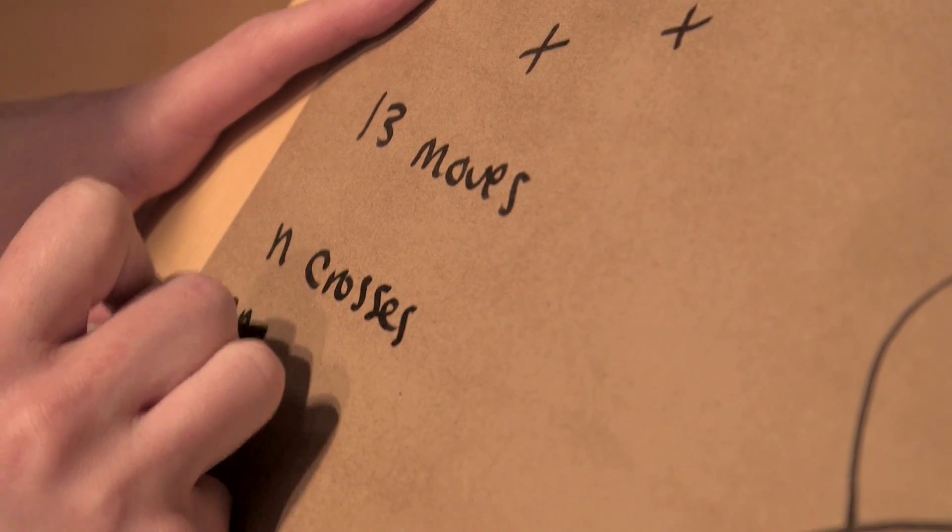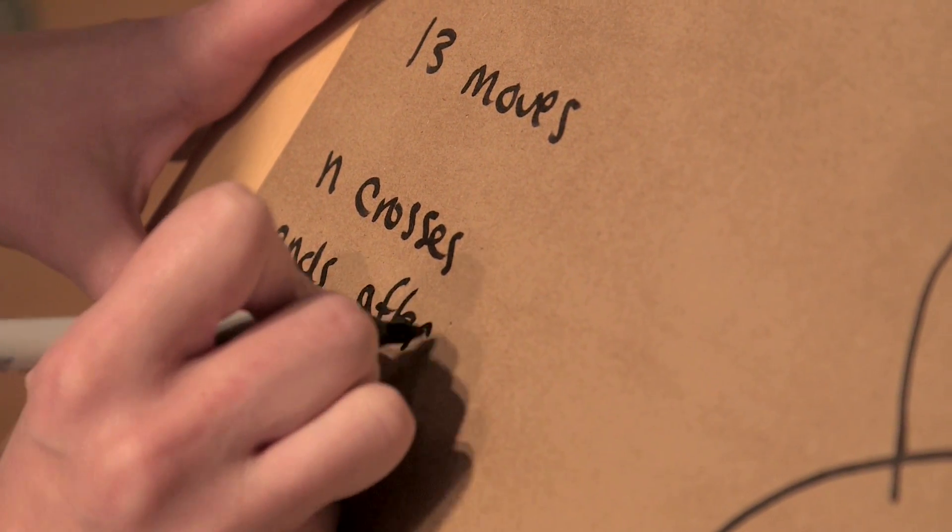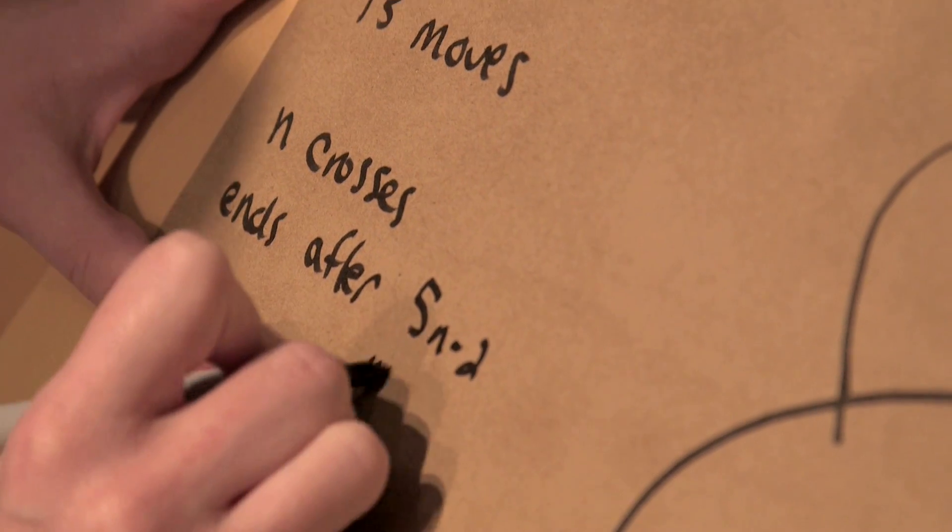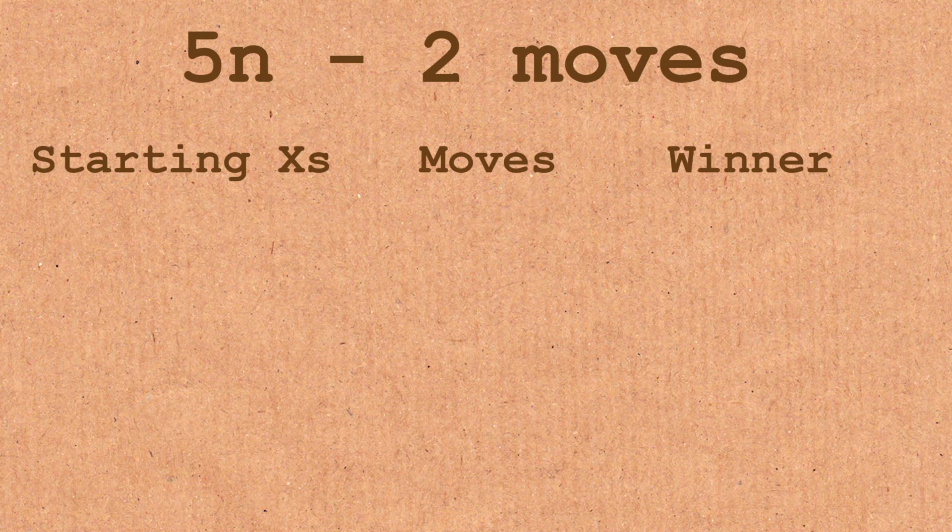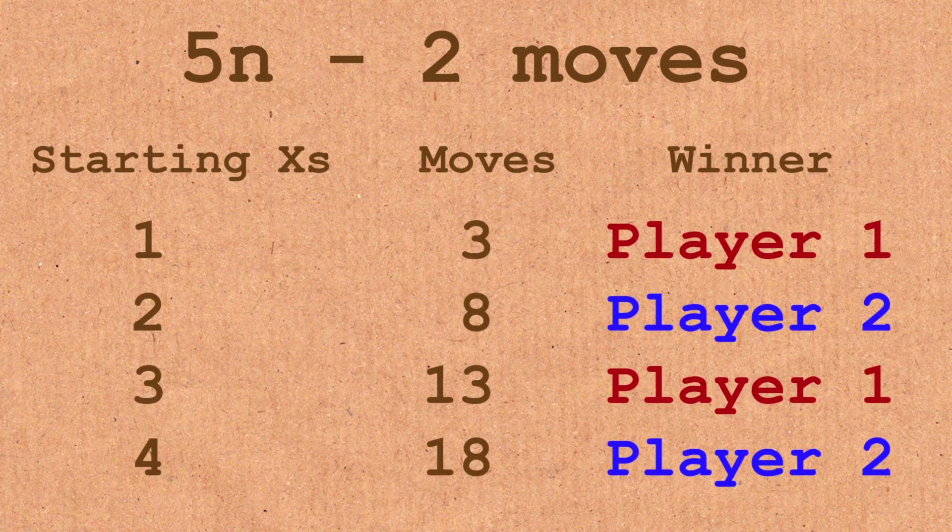And the cool thing about Brussels sprouts is that if we start with N crosses, the game ends after five N minus two moves. And it's the exact same argument we just did, just we add another variable for the number of crosses. So whenever we start with an even number of crosses, player two wins. And with an odd number of crosses, player one wins.